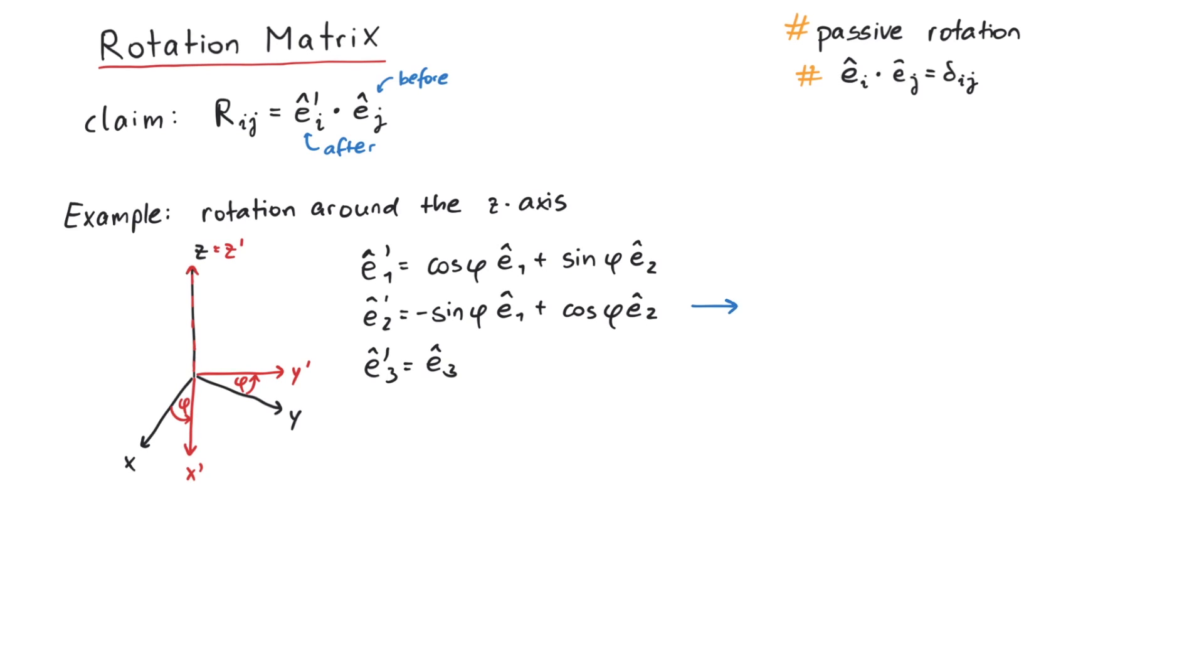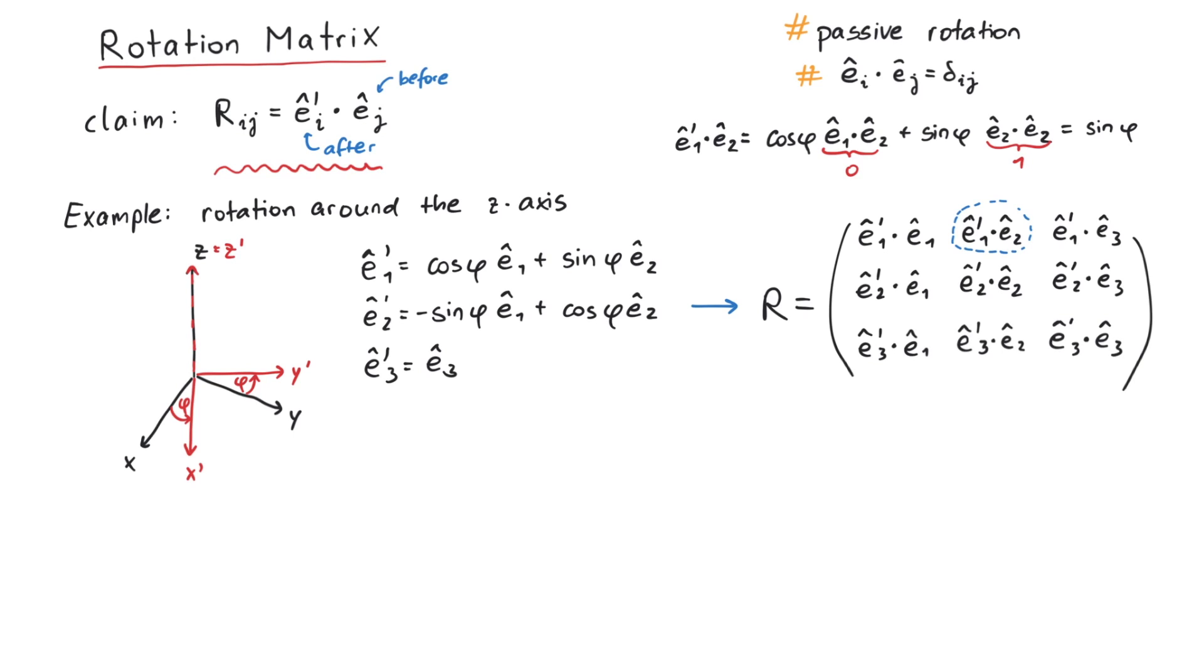Now we can calculate matrix elements. According to our claim, the matrix R is given by these products between old and new basis vectors. Since our basis vectors are assumed to be orthonormal, these dot products are easy to calculate, and we end up with a matrix that you probably recognize, the usual rotation matrix for a rotation around the z-axis.